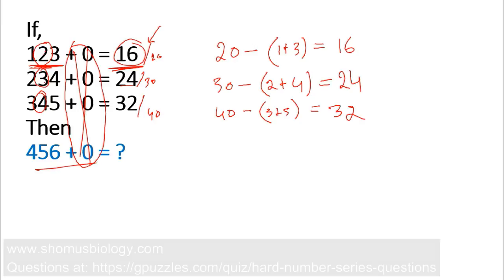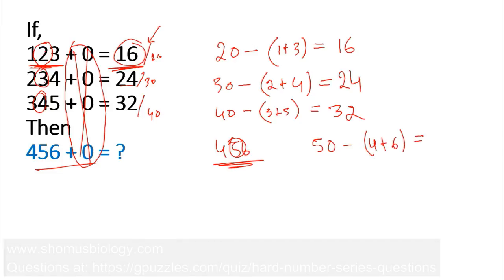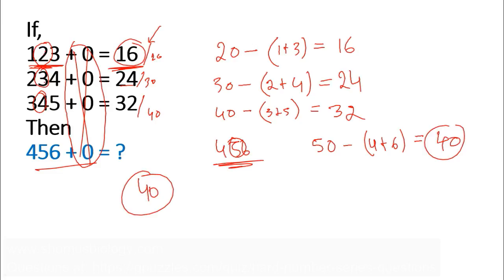Applying the rule to 4, 5, 6: the middle number is 5, so 5×10 = 50. The first number is 4 and the third is 6, so 4+6 = 10. Therefore 50−10 = 40. The answer is 40.